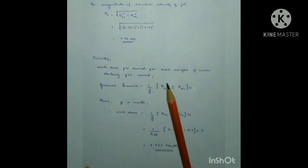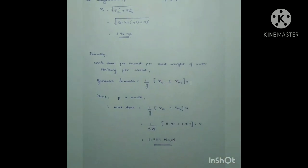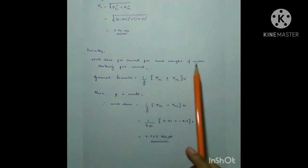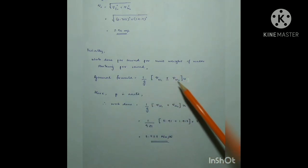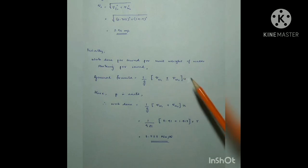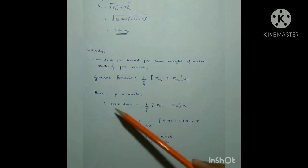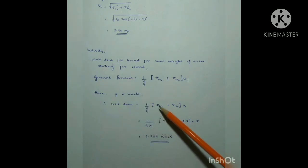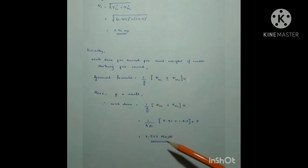The last part is to find the work done per second per unit weight of water striking per second. The general formula is: (1/g) × (Vw1 ± Vw2) × u. Since beta is an acute angle, we use: (1/g) × (Vw1 + Vw2) × u. Substituting the values of g, Vw1, Vw2, and u, we find the work done per second per unit weight of water.